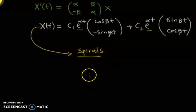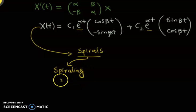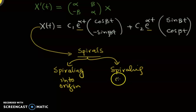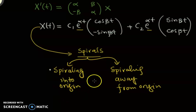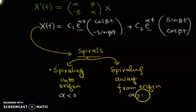So if they are spirals, either they will be spiraling into the origin or spiraling away from the origin. The spirals will be moving into the origin when alpha is less than 0, and they will be spiraling away from the origin when alpha is greater than 0.